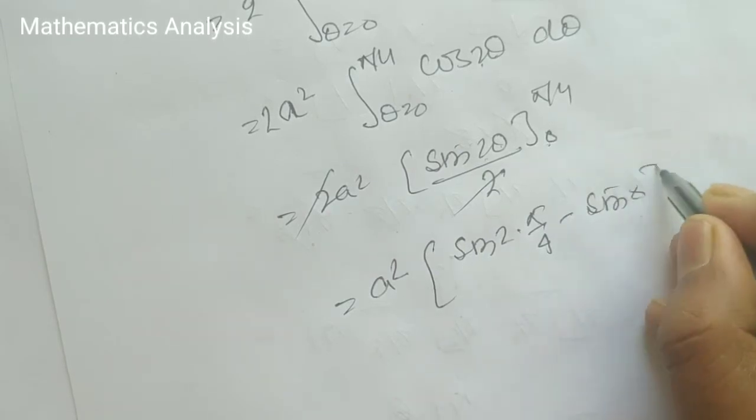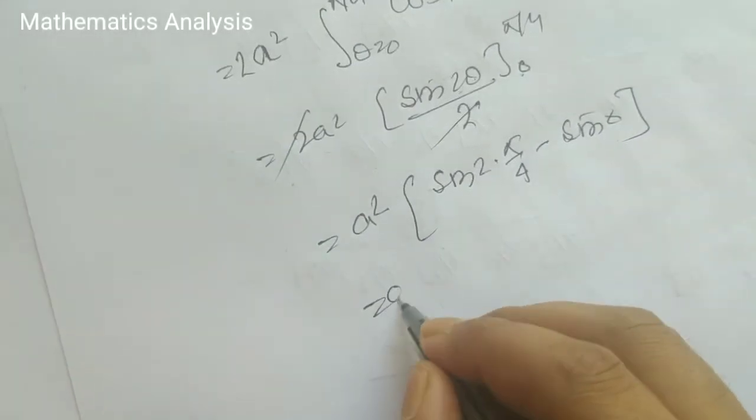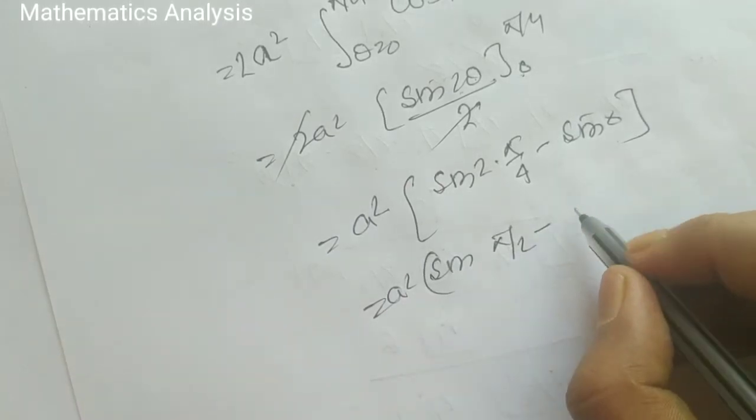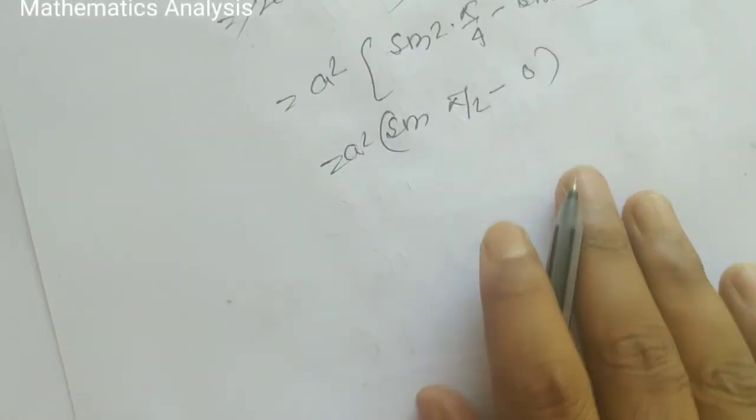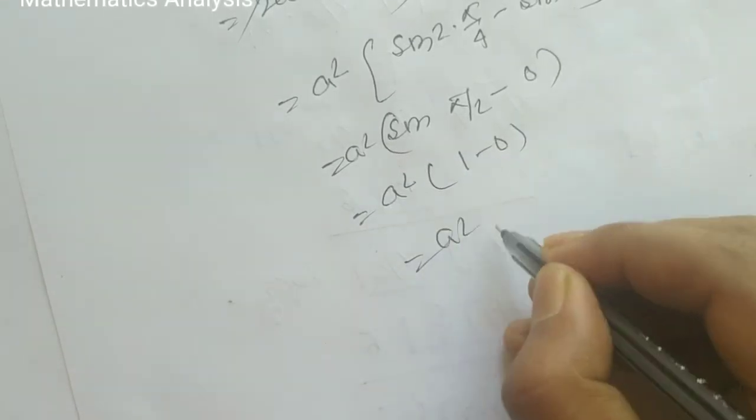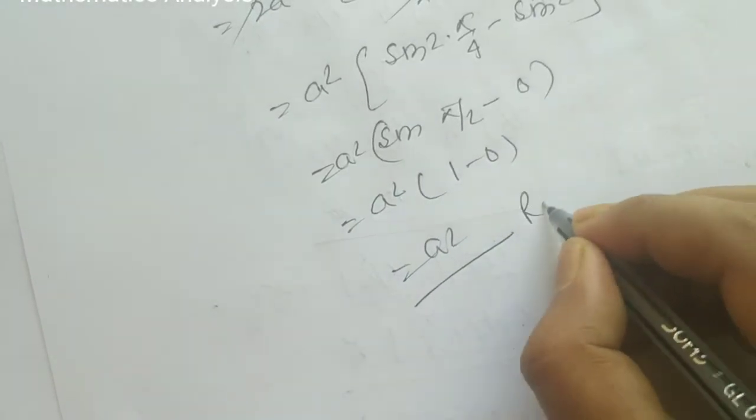Upper limit sin π/2 minus sin 0. Sin π/2 is 1 minus 0, and a squared over 2 times 2 gives a squared as your required answer.